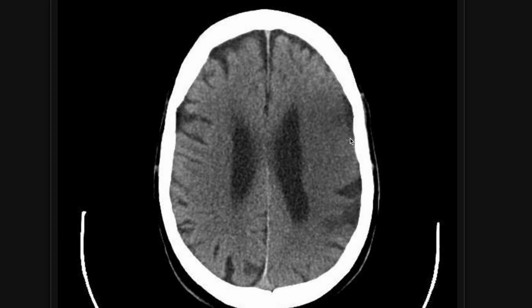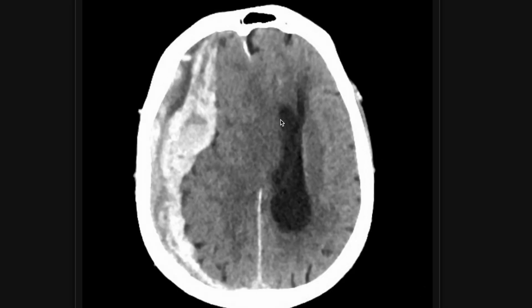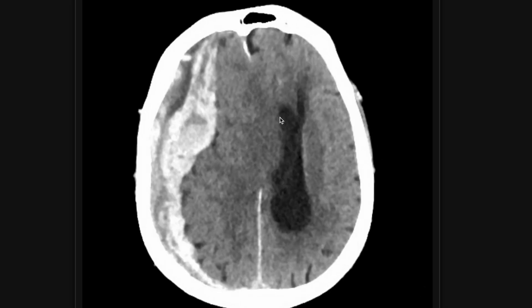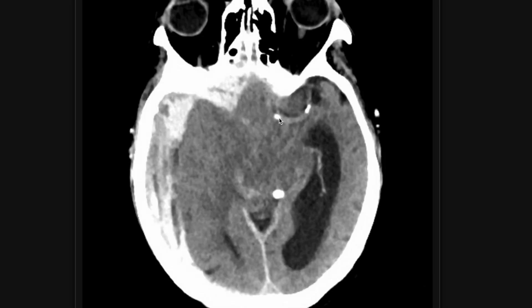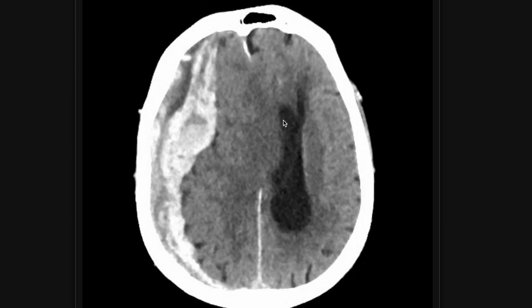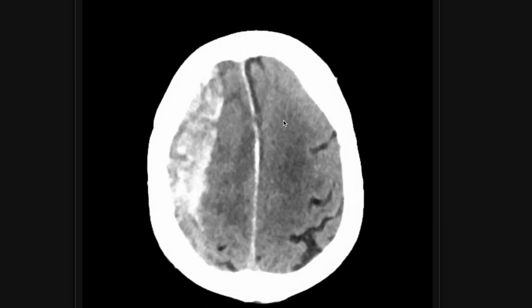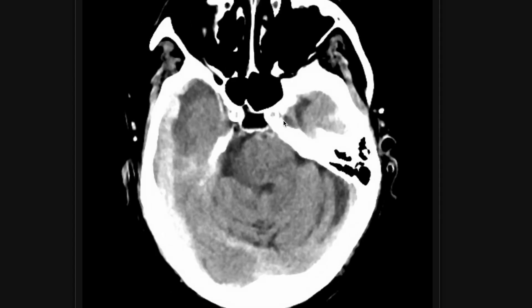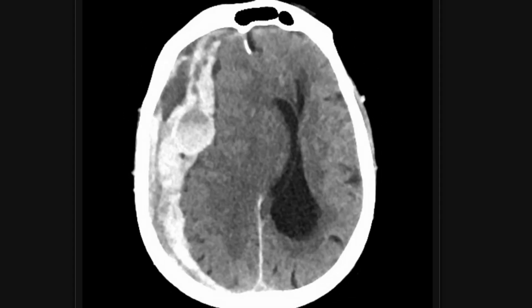The brain doesn't have the blood flow that it needs, so you're starting to have swelling, and that causes the brain to lose some of its density, particularly of the cortex. Moving on to our next case, this is someone coming in with altered mental status after a fall a few days ago. As I'm scrolling through, it's probably not too subtle what is going on here.